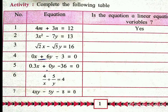First equation: 4m plus 3n is equal to 12. In this equation, two variables m and n are given, and their respective degrees of these variables is also 1. So yes, it is a linear equation in two variables.